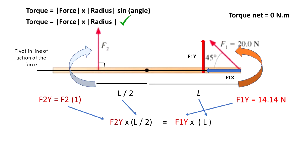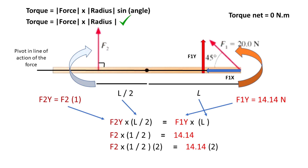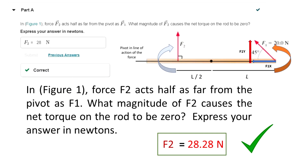This equation means that the torque on the left hand side is equal to the torque on the right hand side. We already know the value for F1y — that's 14.14 Newtons. Now dividing both sides of the equation by L, it cancels out and we end up with F2 multiplied by one half equal to 14.14. Multiplying both sides by 2, we solve for F2y — that's 28.28 Newtons. So the force F2y needs to be 28.28 Newtons in order to cancel out the torque applied by force F1y, and the net torque on the rod will be zero.